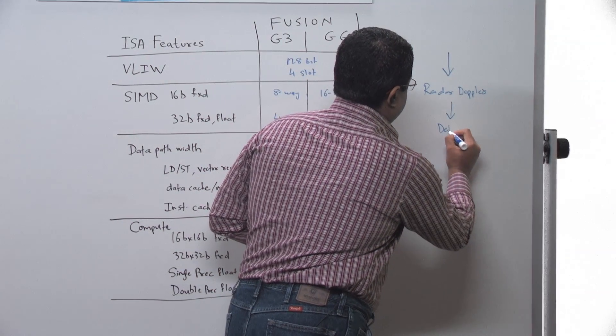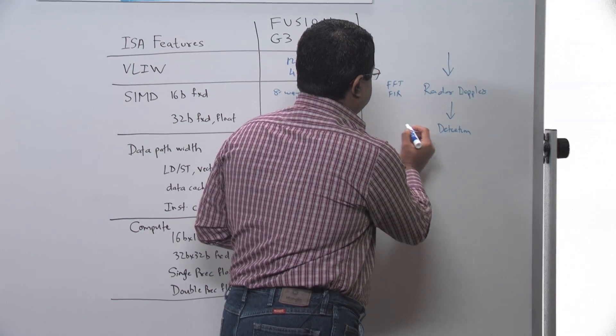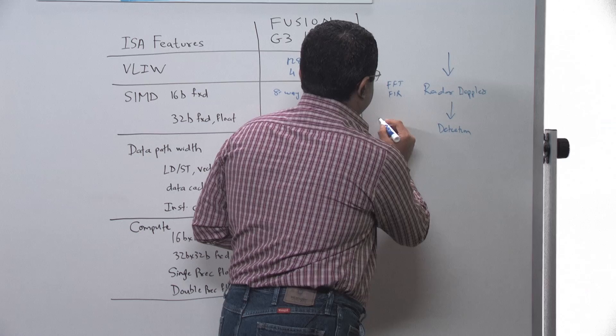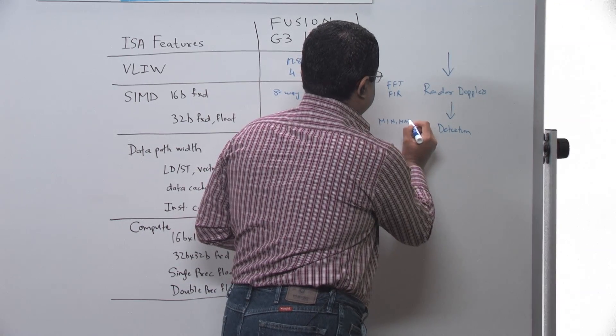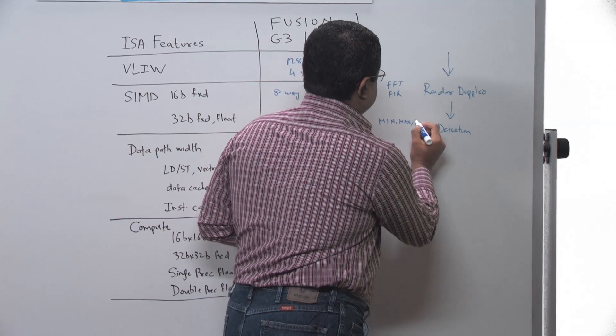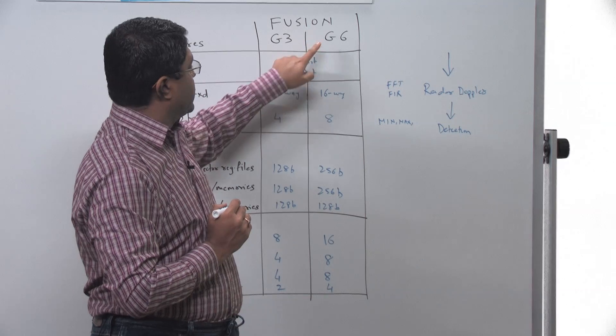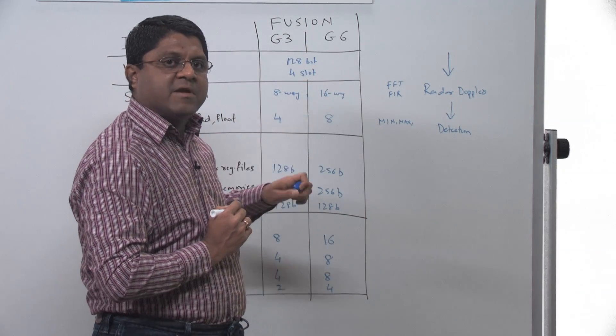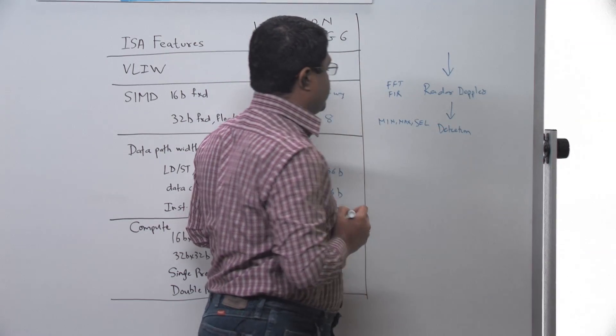There is a detection module in radar which does the constant false alarm rate processing which involves min-max operations and sorting-like operations which can be done using both G3 and G6 vector min-max and other selection operations on the vector register file.